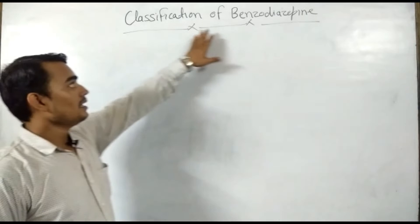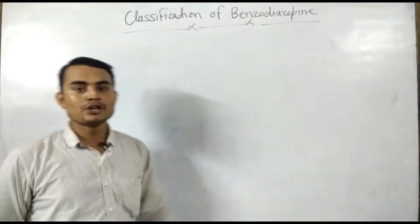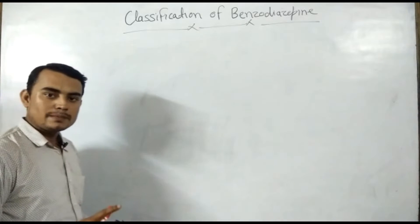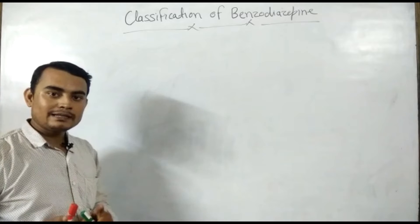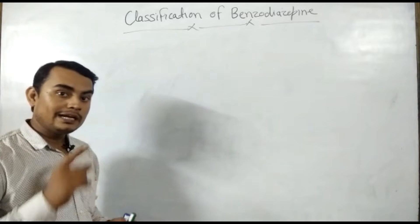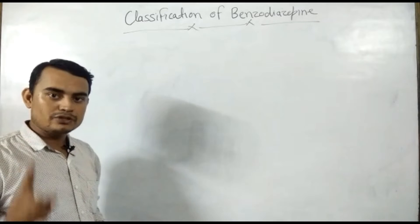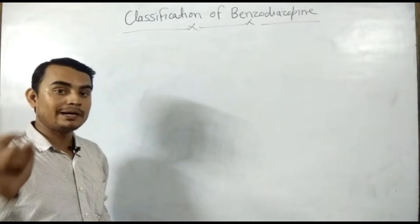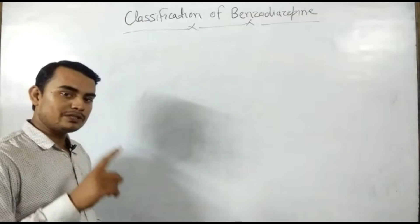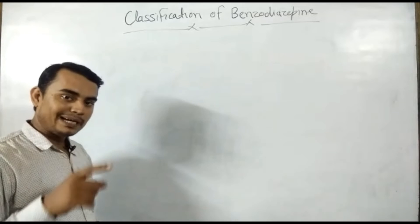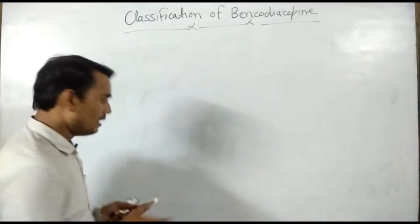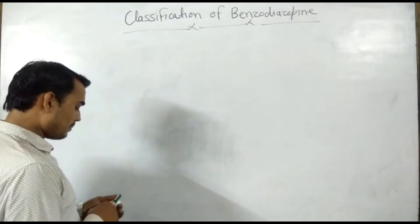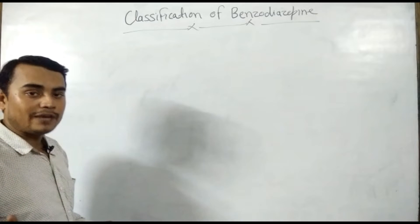Now we are going to discuss the classification of benzodiazepines. As we know, benzodiazepines act at the GABA receptor, and in the GABA receptor there is a benzodiazepine binding site between the alpha-gamma interface. So benzodiazepines bind at the alpha-gamma interface. Benzodiazepines mainly have different types of action.